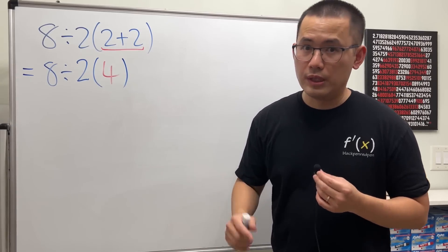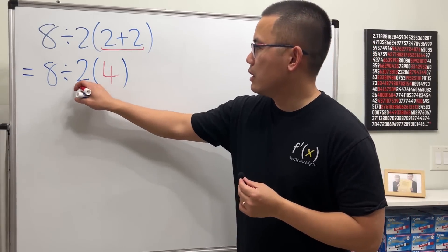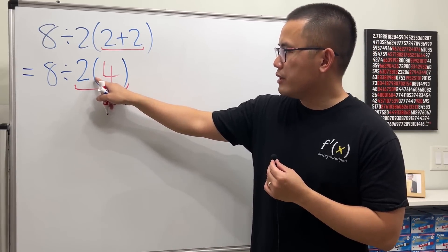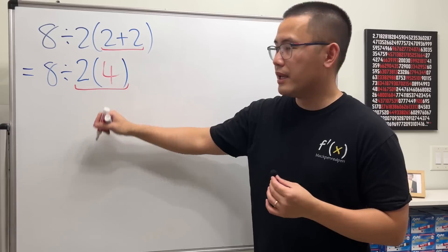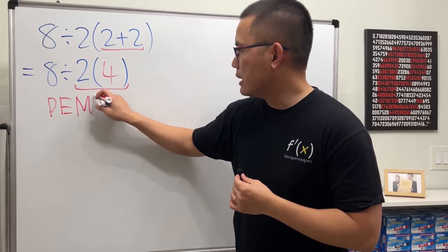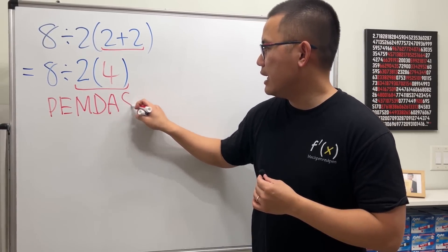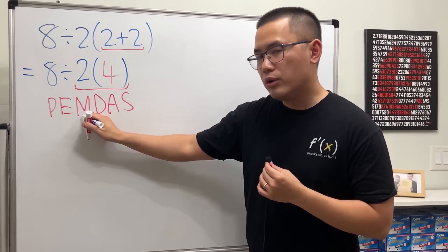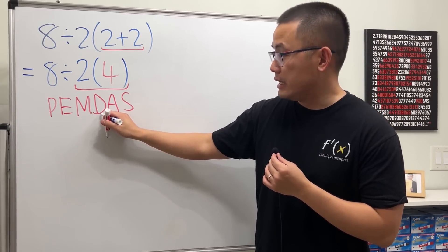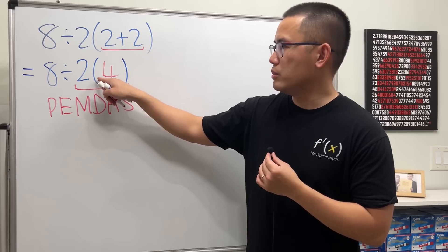Some people will say do the parentheses first, right, which is this and that. And some people will also say because this parentheses now means to multiply, and because of PEMDAS—P-E-M-D-A-S—you see how M is multiplication which is before division, the D, so you multiply this and that.